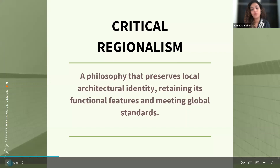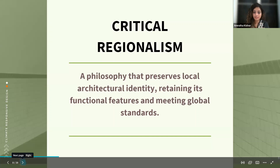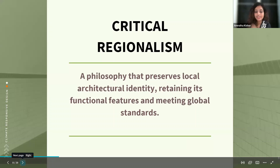What is missing in newer cities is called critical regionalism. The definition of critical regionalism is a philosophy that preserves local architectural identity, retaining its major functional features, while at the same time meeting global standards. We cannot have cities that look like the historic ones anymore, but it's important to identify simple things — like rainfall versus no rainfall — and understand what that means for architecture. Technology has advanced and lifestyle has changed, but we need to find the best middle ground.